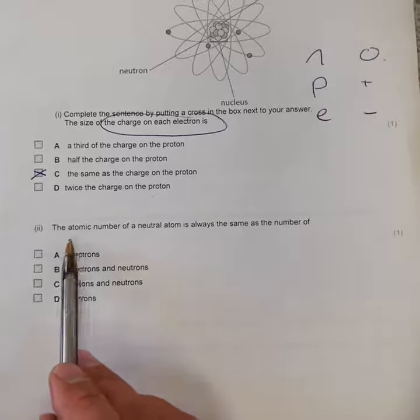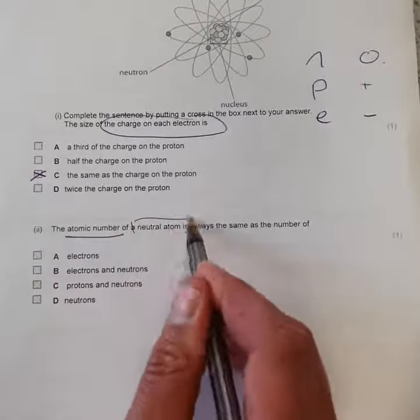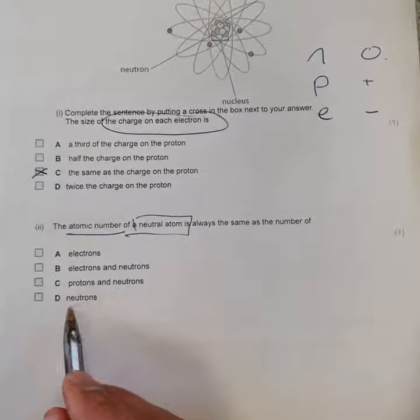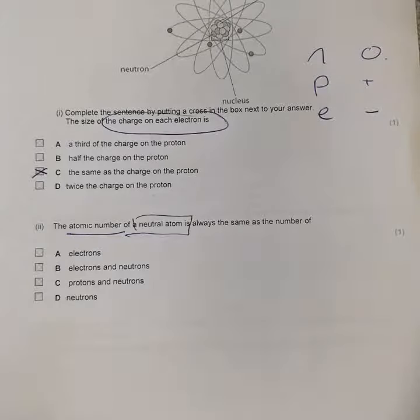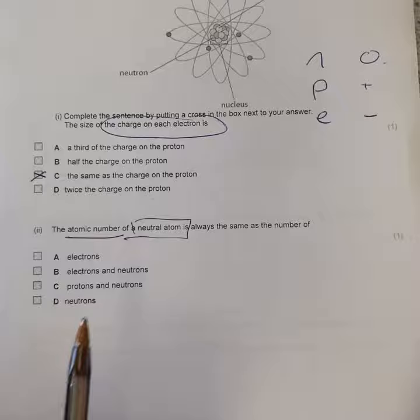For the second part, the atomic number. The atomic number on a neutral atom is always the same as the number of: electrons, electrons and neutrons, protons and neutrons, or neutrons. It's a deceptively easy question. It's a tricky question. It's not as easy as it first appears.